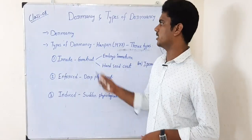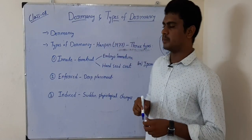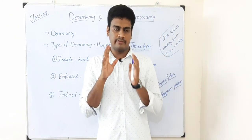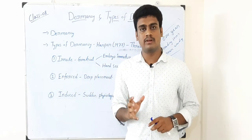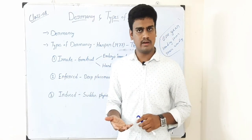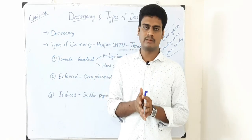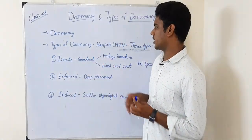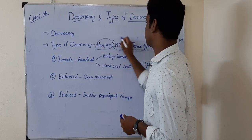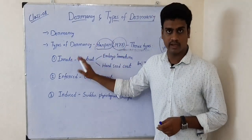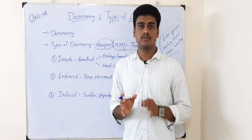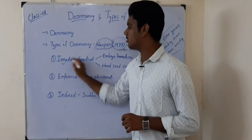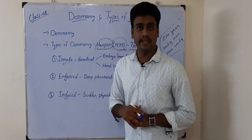By going for crop rotation, two or three years later we can grow the same crop again. That is the best method to avoid parasitic weeds in the field. The next topic is dormancy and types of dormancy. The meaning of dormancy is nothing but the resting stage of the seed — when conditions like temperature and soil moisture are all favorable for the seed but still it will not germinate, that we call seed dormancy. According to Harper in 1977, there are three types of dormancy.